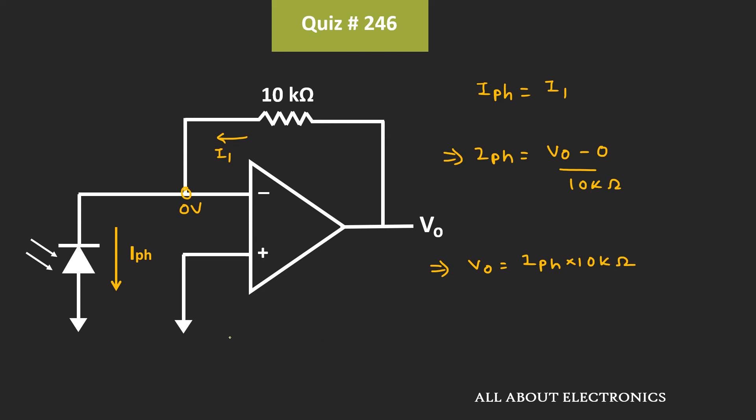Now here, we have been given that initially, this reverse saturation current is equal to 100μA. Let's say at that time, the voltage is equal to V0-1. So this voltage V0-1 will be equal to 100μA times 10kΩ. That is equal to 1V.